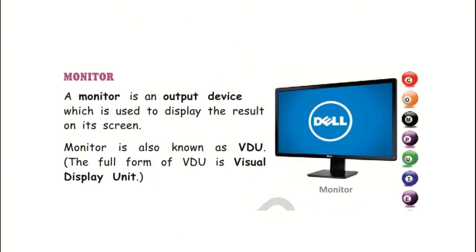Let's read about the monitor from the book. A monitor is an output device which is used to display the result on its screen. So whatever work you do on your keyboard, you can see it on the screen. Or if you want to watch any movie, cartoon, or play a game, the visual display is at the monitor. Monitor is also known as VDU — the full form of VDU is Visual Display Unit.